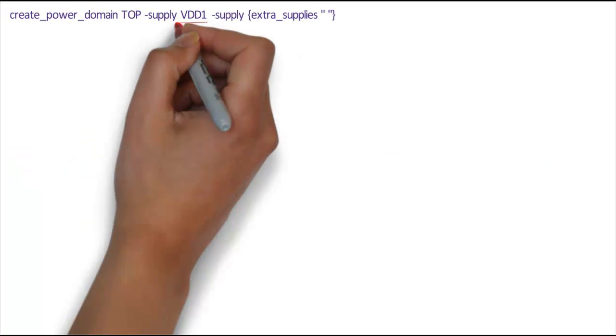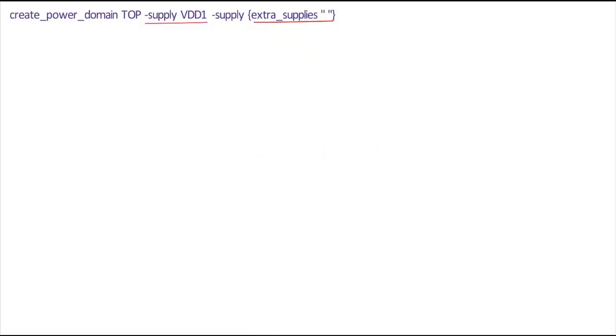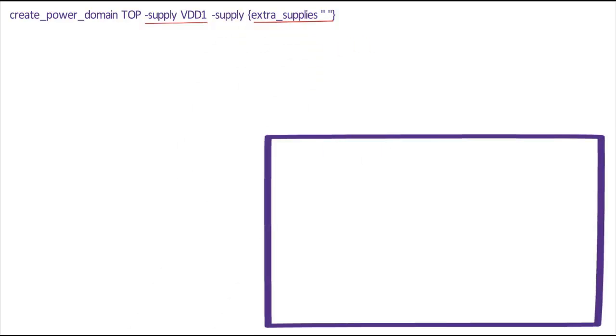First, we create Power Domain Top with SupplyVDD1 and Extra Supply's Empty list. This will ensure no other supplies are available in Top. This will create a Power Domain Top with Top.Primary and Top.VDD1.